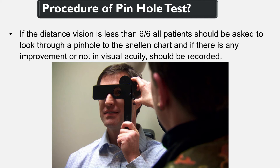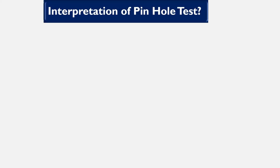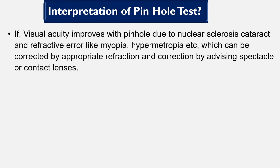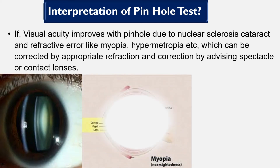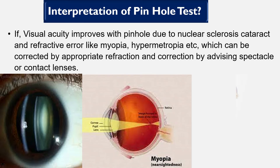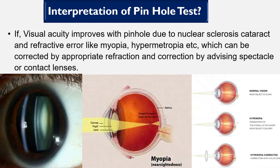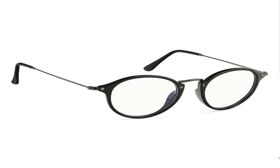Now, let's come to the interpretation part to correlate the reason for decreased vision of the patient. Interpretation of pinhole test: if visual acuity improves with pinhole, it could be due to nuclear sclerosis, cataract, and refractive error like myopia, hypermetropia, etc., which can be corrected by appropriate refraction and correction by advising spectacles or contact lenses.